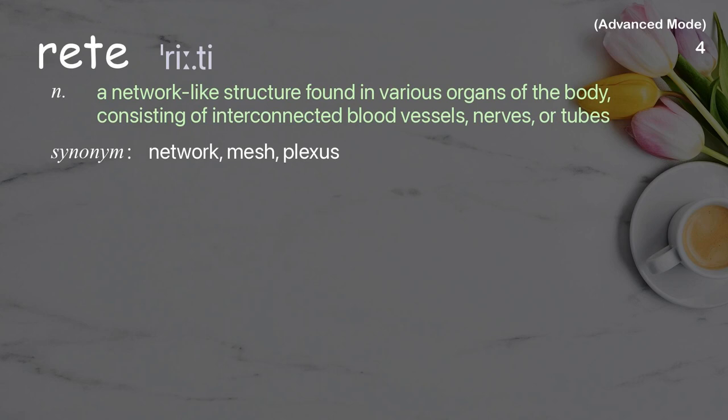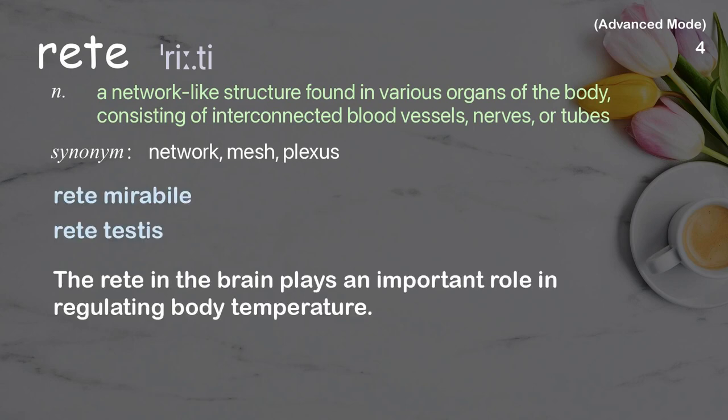Rete: A network-like structure found in various organs of the body, consisting of interconnected blood vessels, nerves, or tubes. Examples: rete mirabile, rete testis. The rete in the brain plays an important role in regulating body temperature.